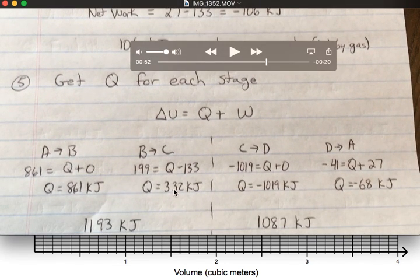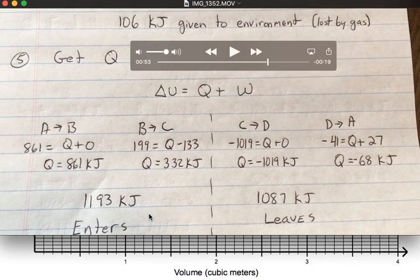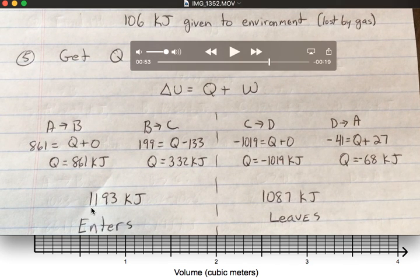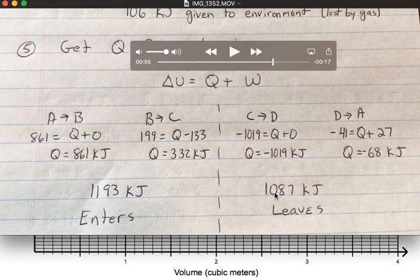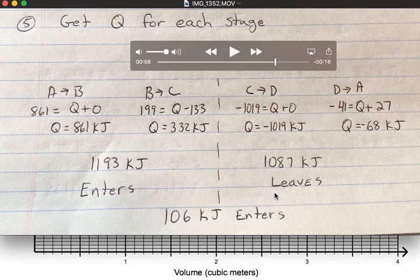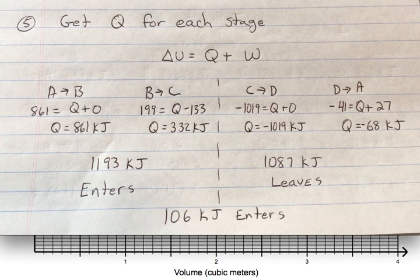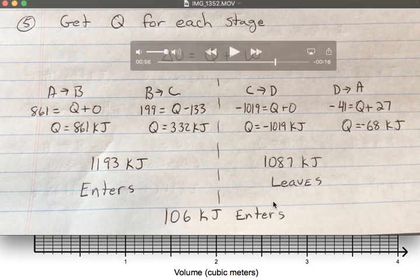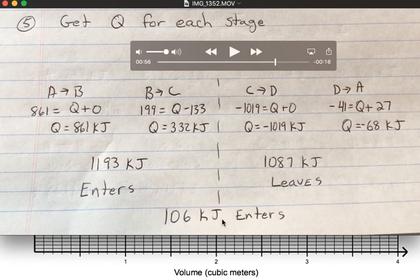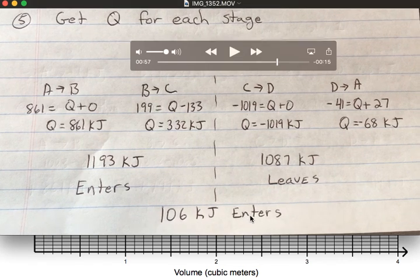And then, we find from A to B and B to C, we have a net heat entering our system of 1193. From C to D and D to A, we see we have a net of 1087 kilojoules leaving our system. This gives us a net of 106 kilojoules entering our system. This is good because it should equal the network that was done. We don't really care about this 106 net heat.